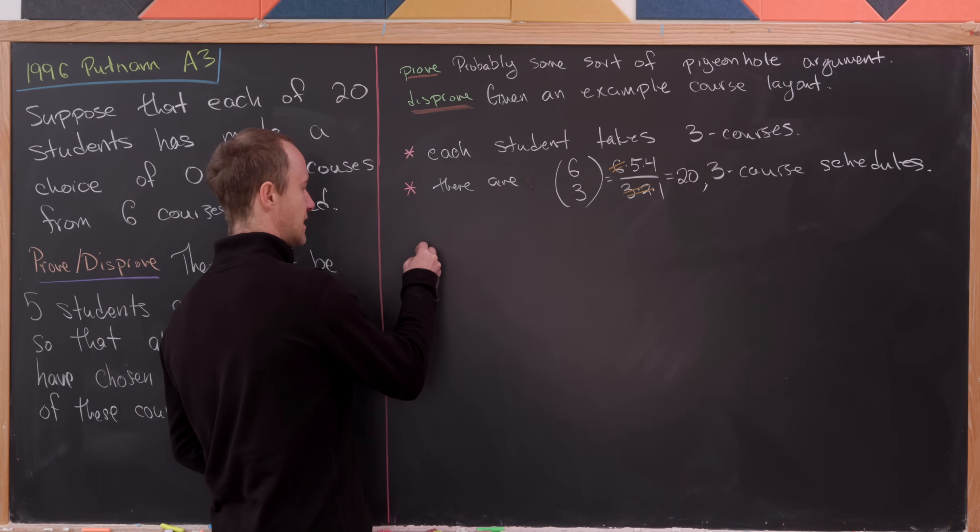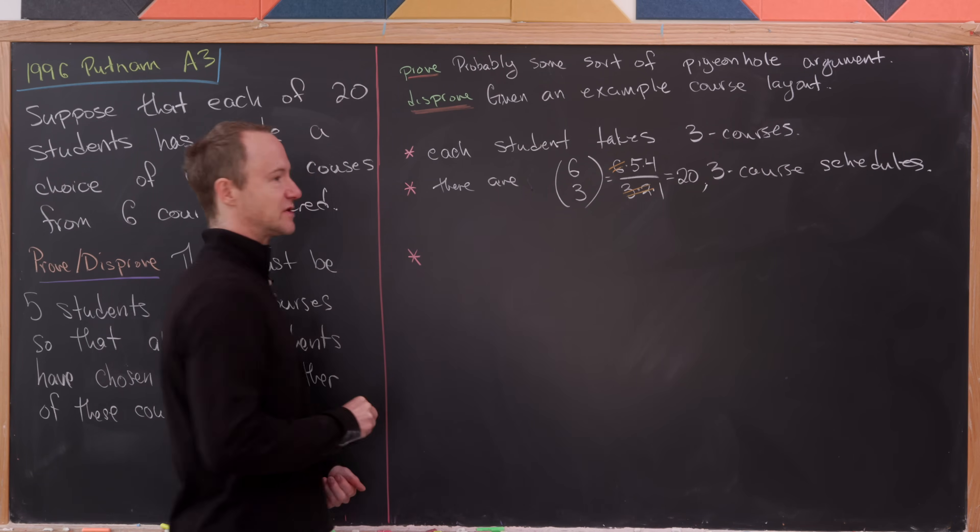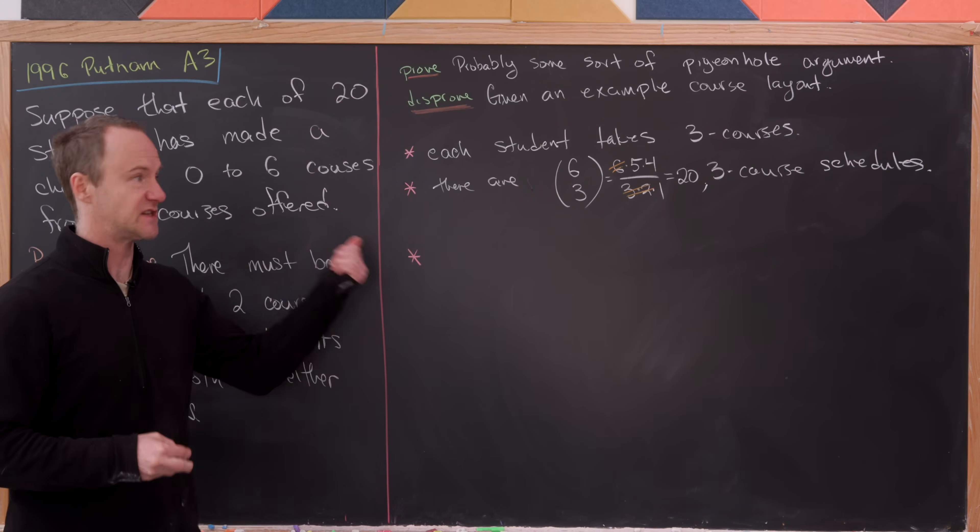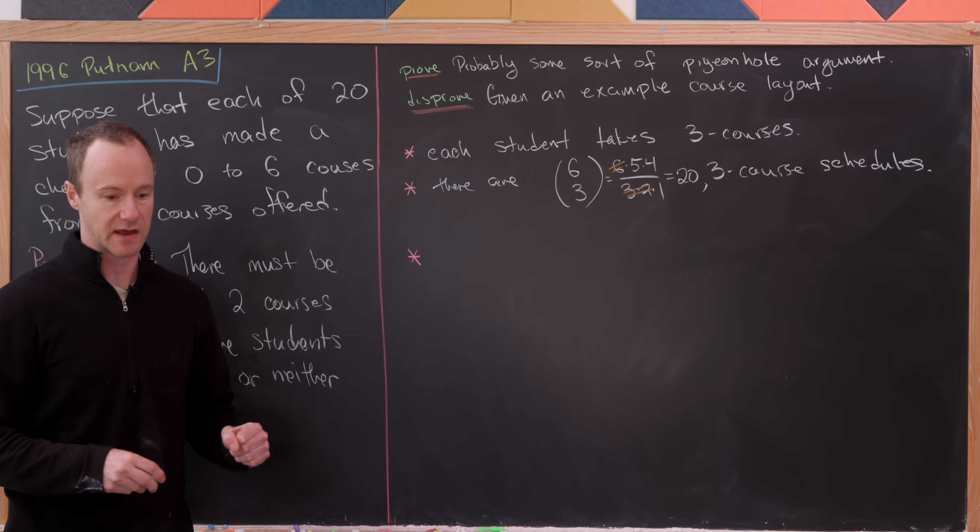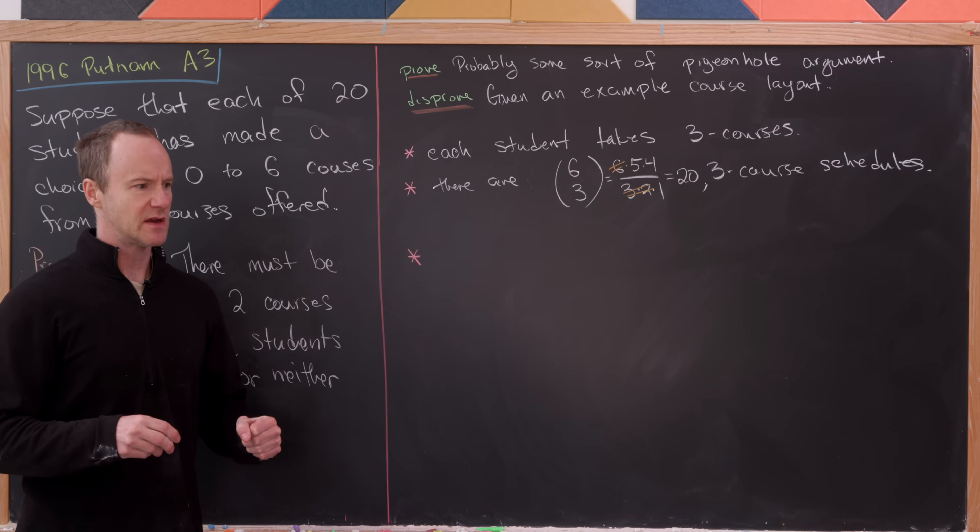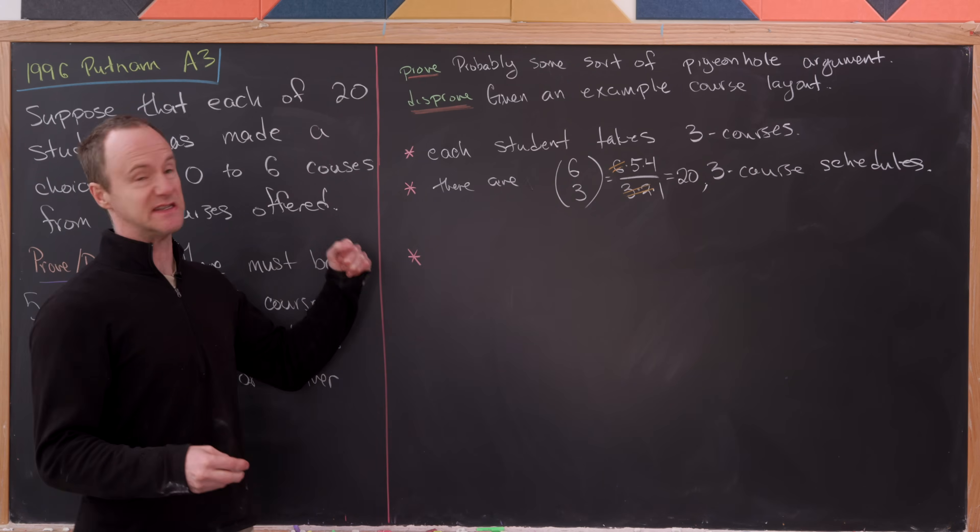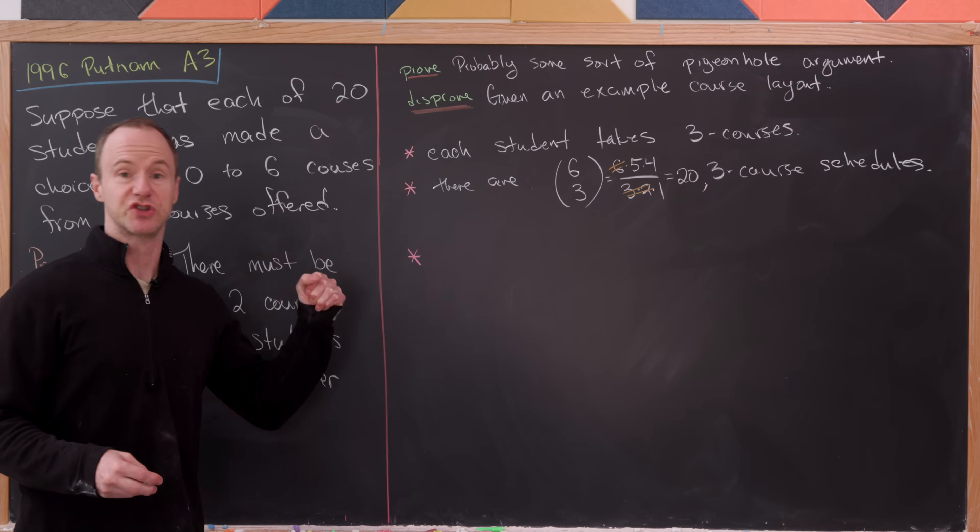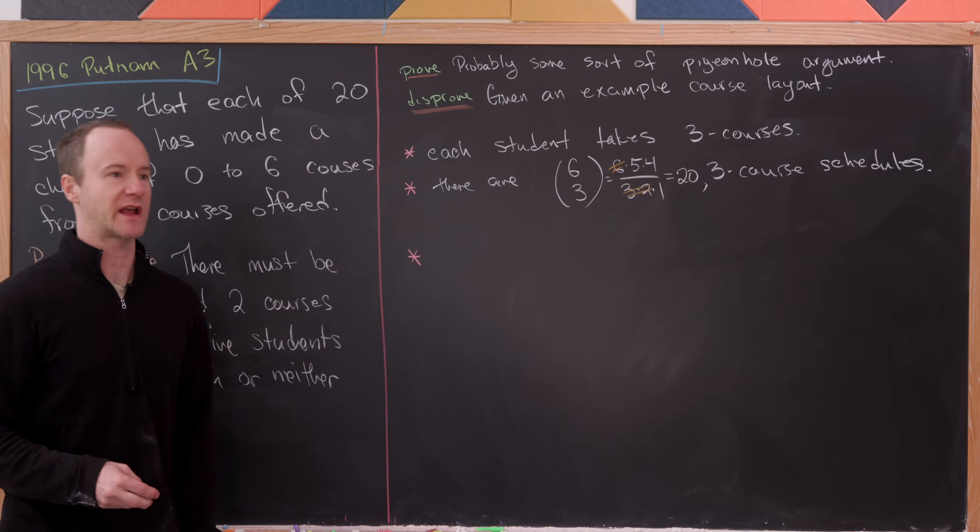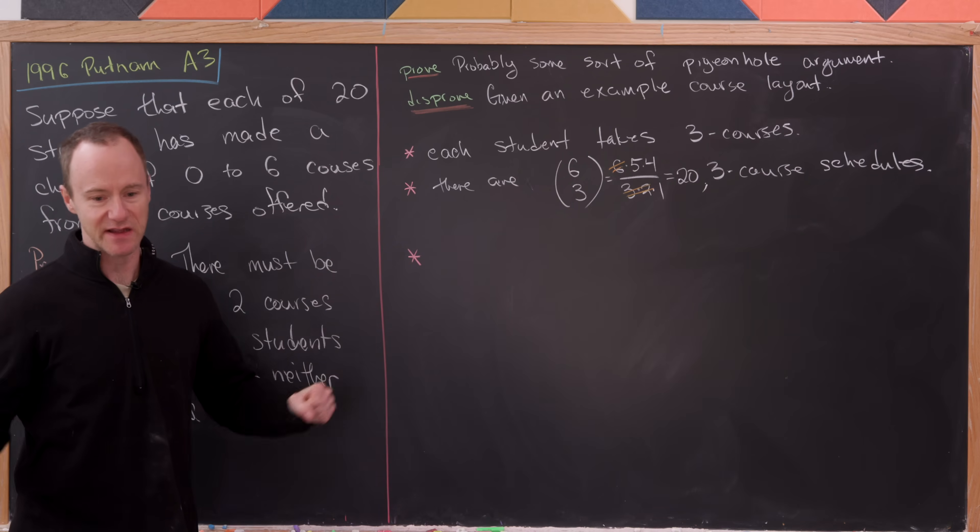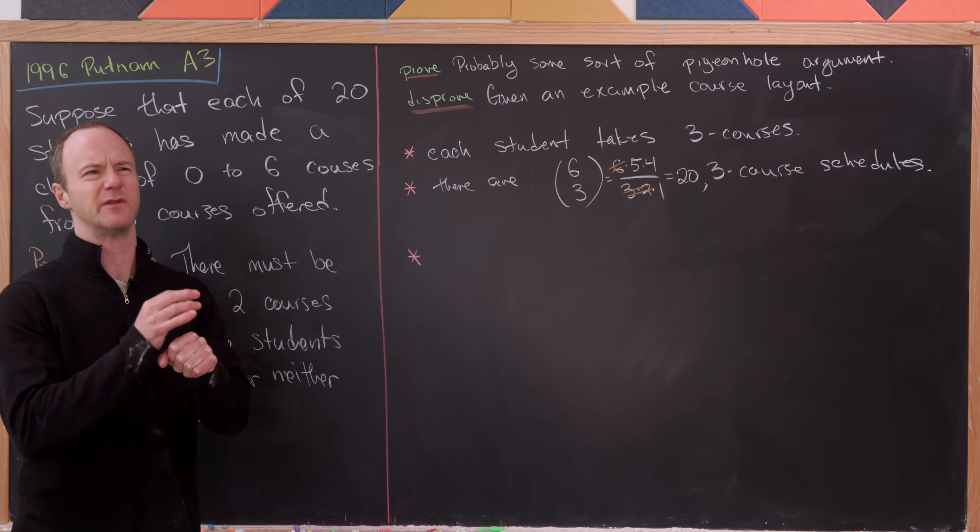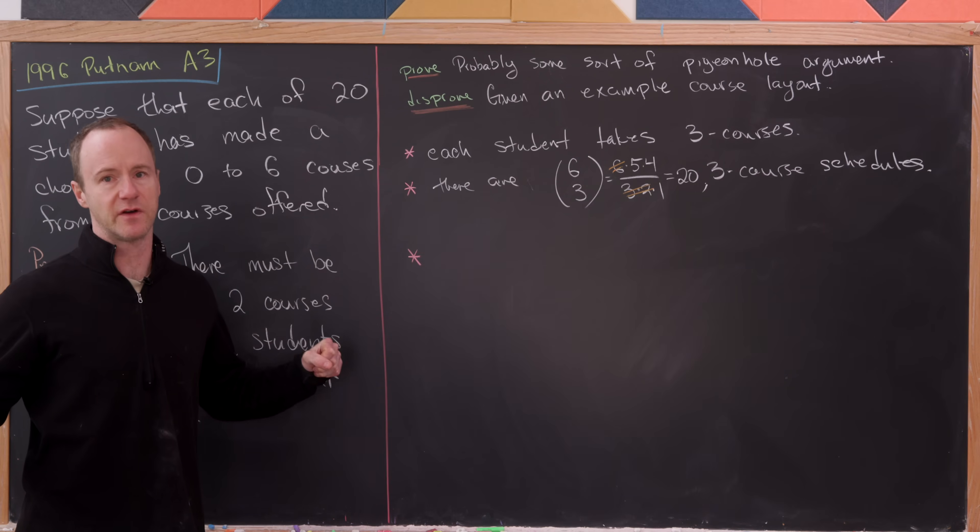There are 20 three-course schedules. And that's going to allow us to spread these three-course schedules out evenly. And we didn't a priori know that we would be able to do that. But now that we've seen this numerical coincidence, we can. And this maybe lends even more evidence to this disproof strategy here, or this look for a counterexample, as well as this counterexample being some sort of even spread of the courses.